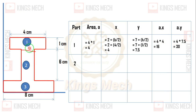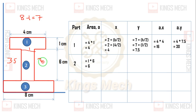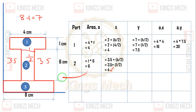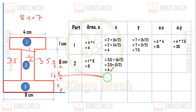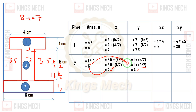For the second part (web), the dimensions are 1 and 6, so area = 1 into 6 equals 6. In the x direction: 8 minus 1 equals 7, so 3.5 plus 1 gives x = 3.5 plus b/2, b value is 1 divided by 2 which gives 0.5, so x equals 4. In the y direction, h/2 equals 6/2, and 1 plus h/2 equals 1 plus 3 equals 4.